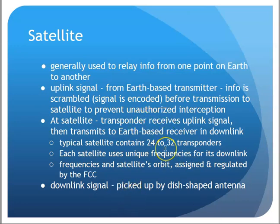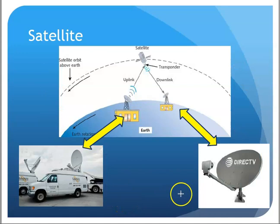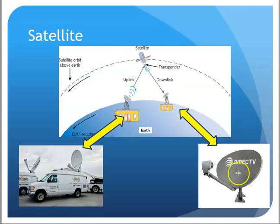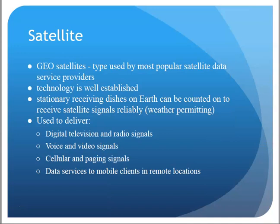Uplink from your Earth-based transmitter: the signal is encoded and sent up. At the satellite, there's a transponder there to receive that signal and turn around and send it back down to Earth at the receiving station. The downlink signal is picked up by a dish-shaped antenna. Here I show an uplink truck — maybe at a specific sporting event — that's going to literally beam that up to a satellite, which will beam it back to either a television studio or people at home.